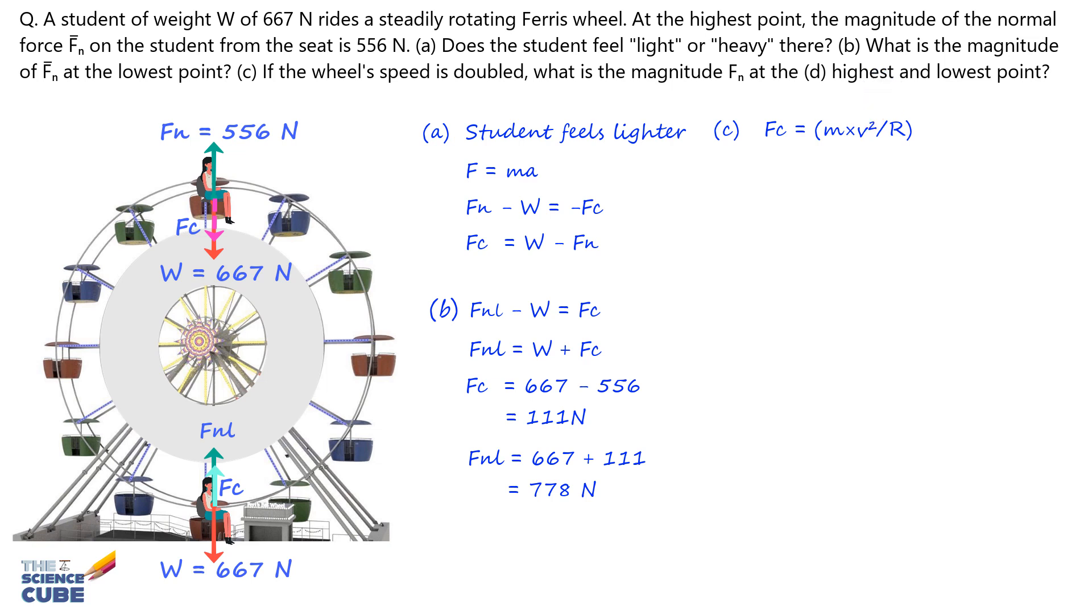So Fc new, that is the new centripetal force at double the speed, equals M times 2V squared upon R. The radius remains the same, and V has now become 2V.